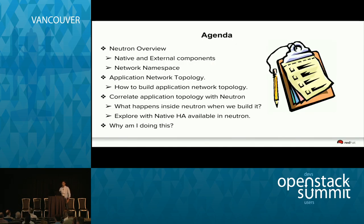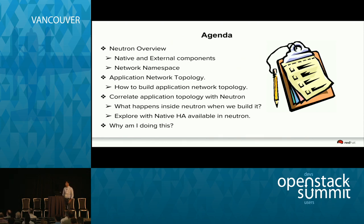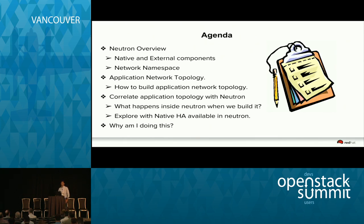The agenda for today: I would first give you a brief overview of Neutron, then explain the different native components within Neutron and the different external components that Neutron depends on. I would explain what a network namespace is, and how Neutron uses network namespaces to create application topology. Then I would explain how a network topology of an example multi-tier application looks like and the steps to build it, and I would try to correlate that application topology with Neutron — what happens inside Neutron when we create a network, a router, a load balancer, or a firewall.